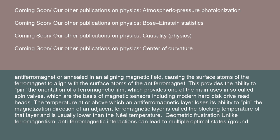The temperature at or above which an antiferromagnetic layer loses its ability to pin the magnetization direction of an adjacent ferromagnetic layer is called the blocking temperature of that layer, and is usually lower than the Néel temperature.